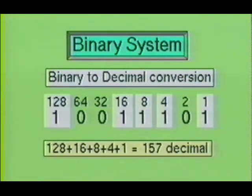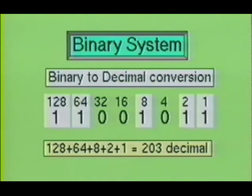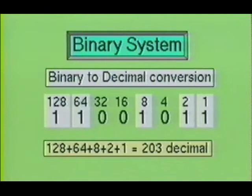Now let's change the value of the byte and see what the decimal number becomes. As you can see, we have 128, a 64, an 8, a 2, and a 1. When we add 128 plus 64 plus 8 plus 2 plus 1, we acquire a sum of 203 decimal.